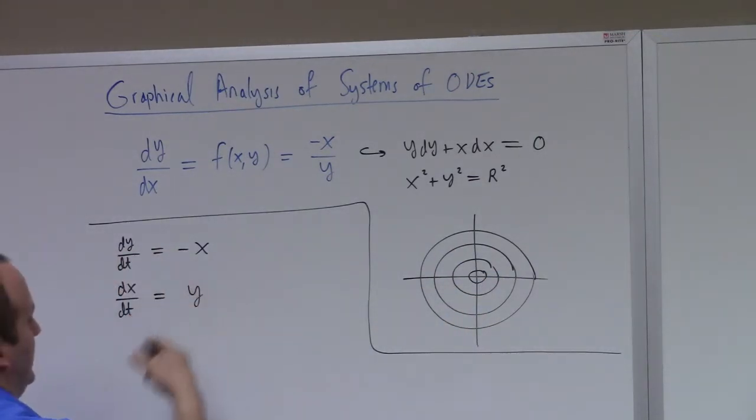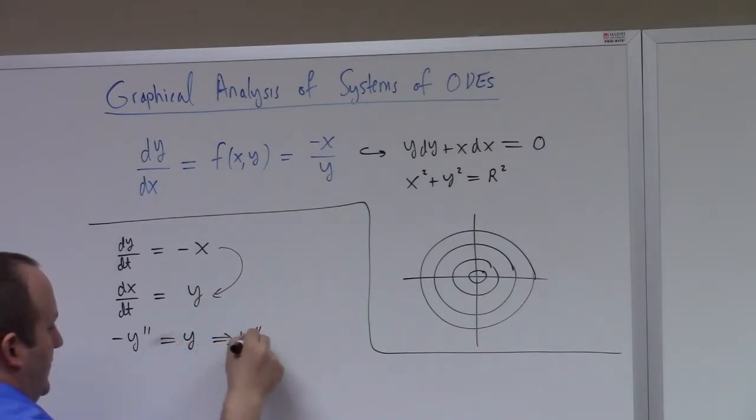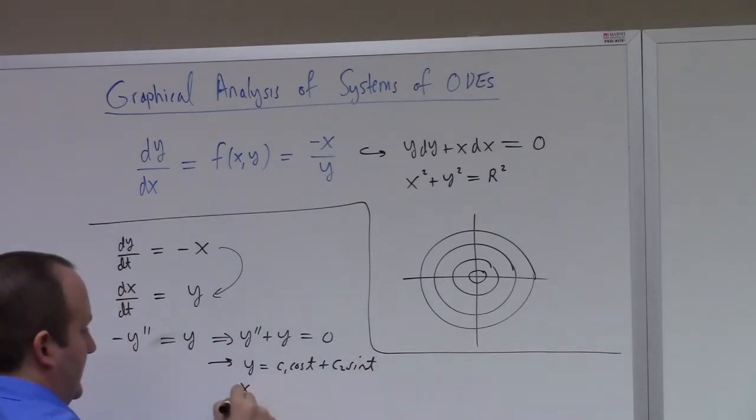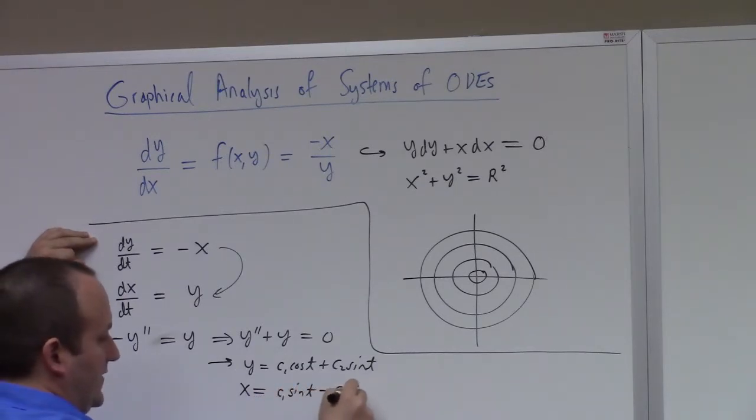Solutions to this will give you a parameterization, parametric equations, which will fit the solution curves to your timeless equation. And we could solve this. The easiest way to solve this particular thing is just substitution. This gives me, if I plug this down into there, minus Y'' equals Y, which tells me Y'' plus Y equals zero.